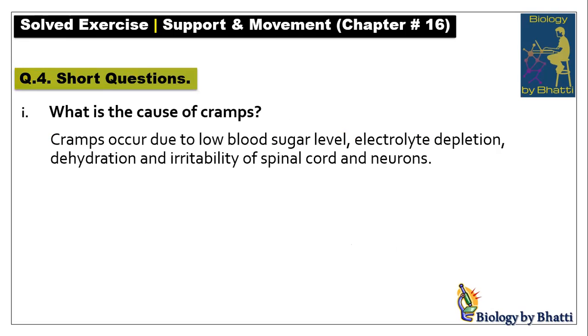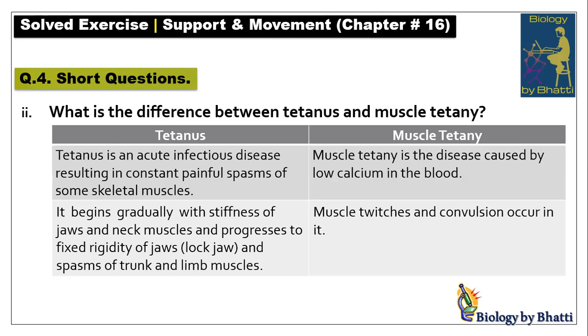Short questions, question number one: what is the cause of cramps? Cramps occur due to low blood sugar levels, electrolyte depletion, dehydration, and irritability of the spinal cord and neurons.